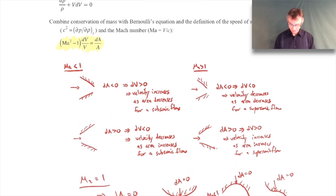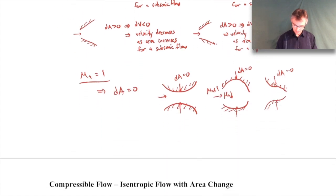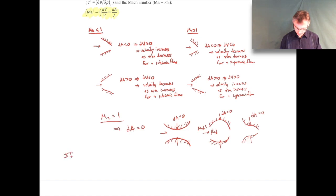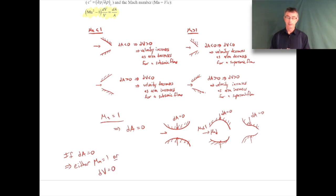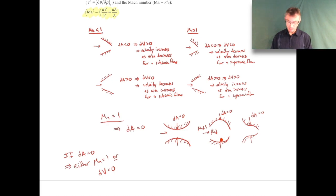If dA is equal to zero, we could have either M = 1 or dV = 0 - we don't know which one just from the equation alone. In the maximum area case with subsonic incoming flow, what ends up happening is just dV = 0, meaning the velocity doesn't change at that point. We're not going to reach M = 1 because we're always diverging away from it when the incoming flow is subsonic.